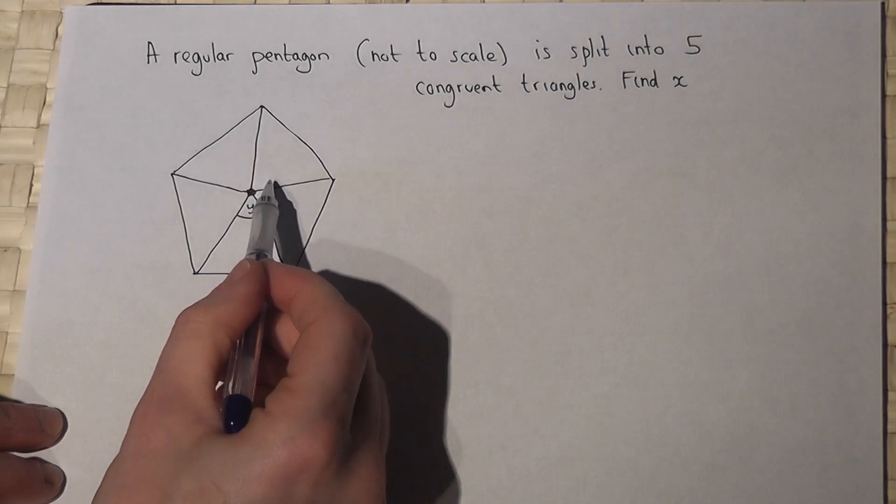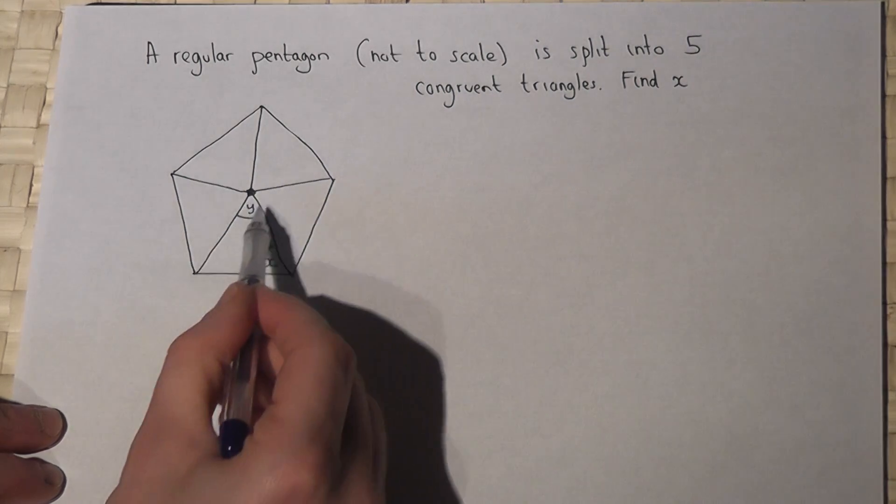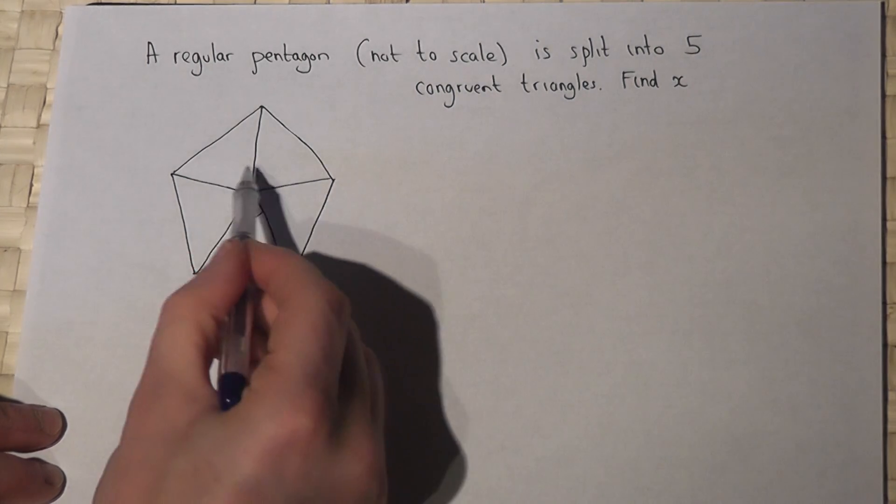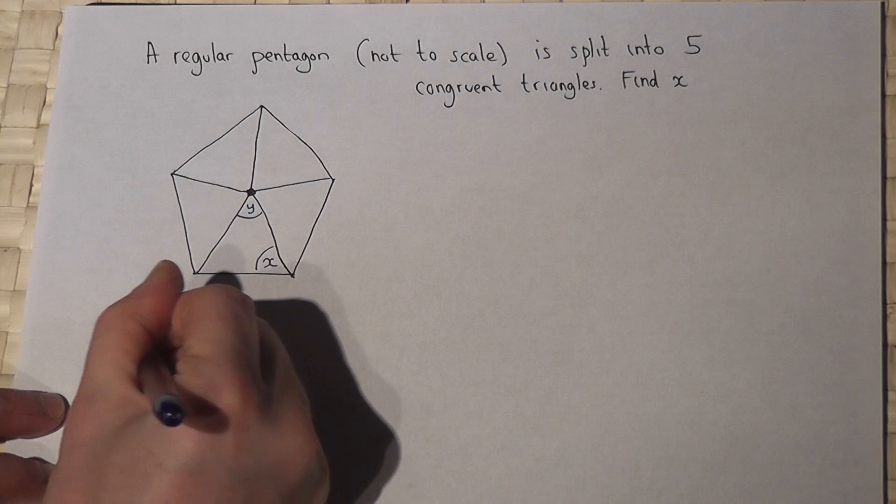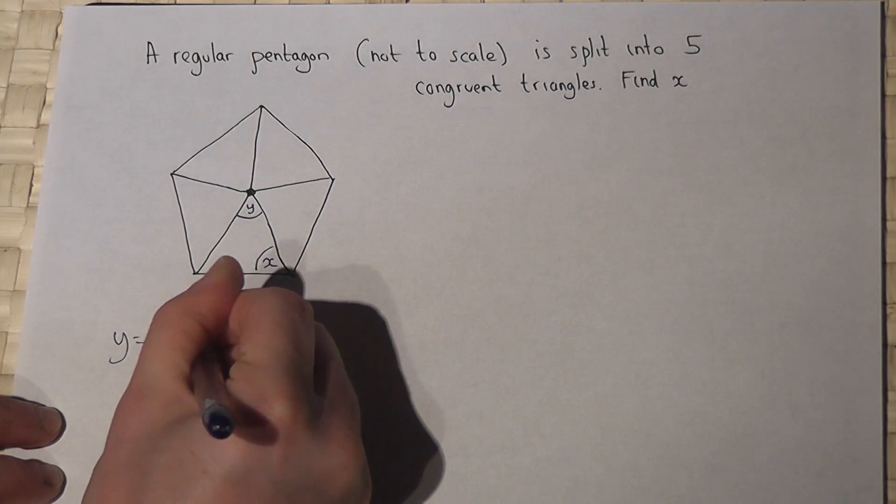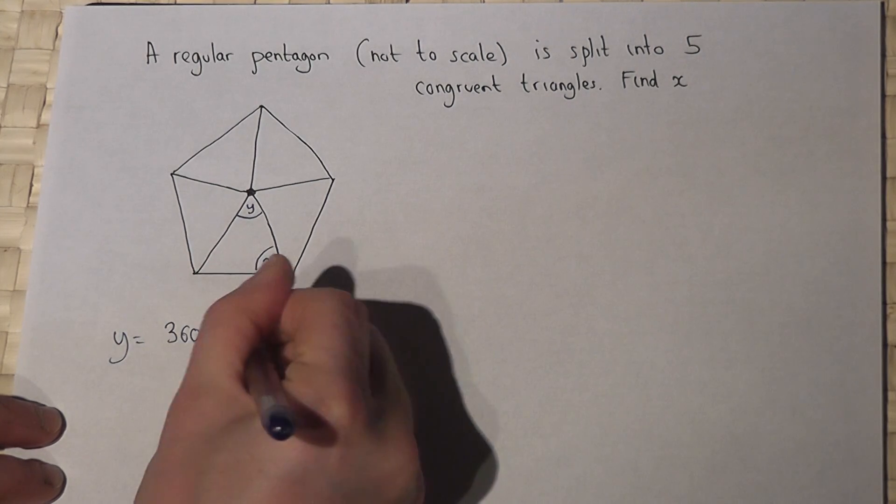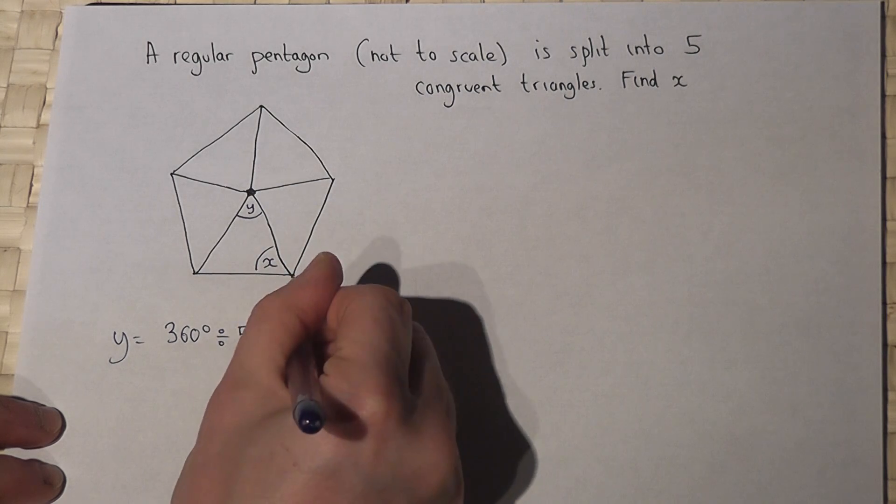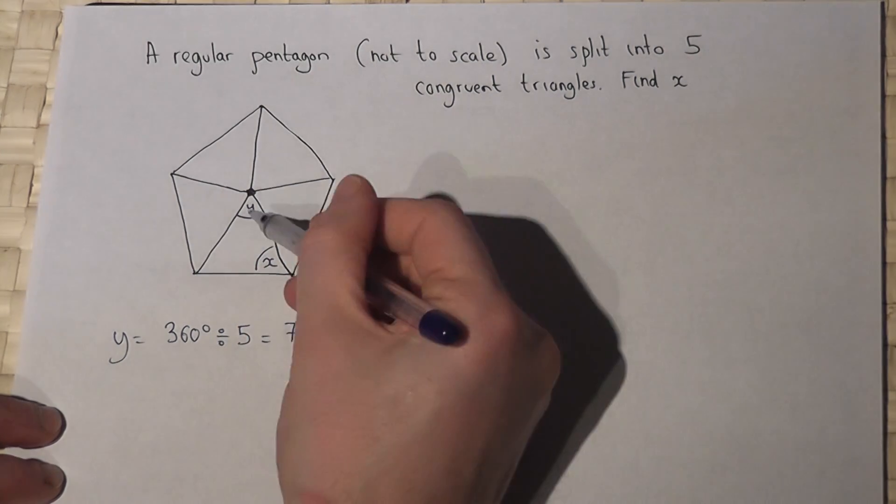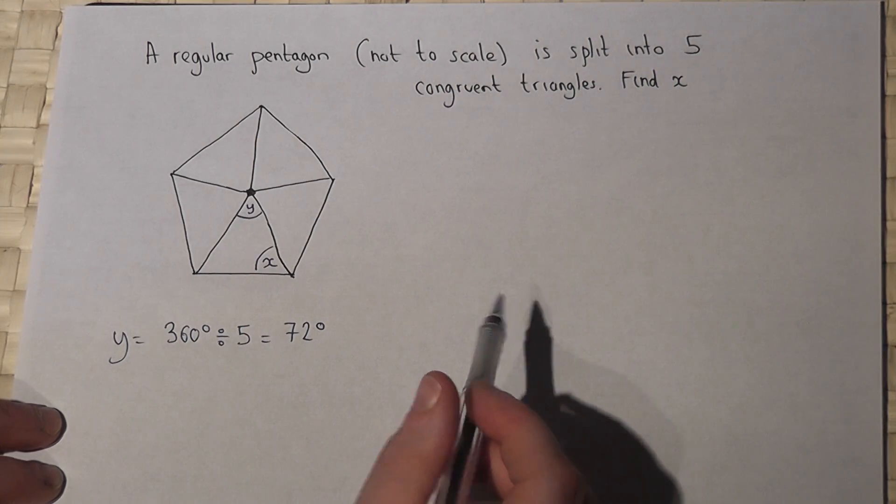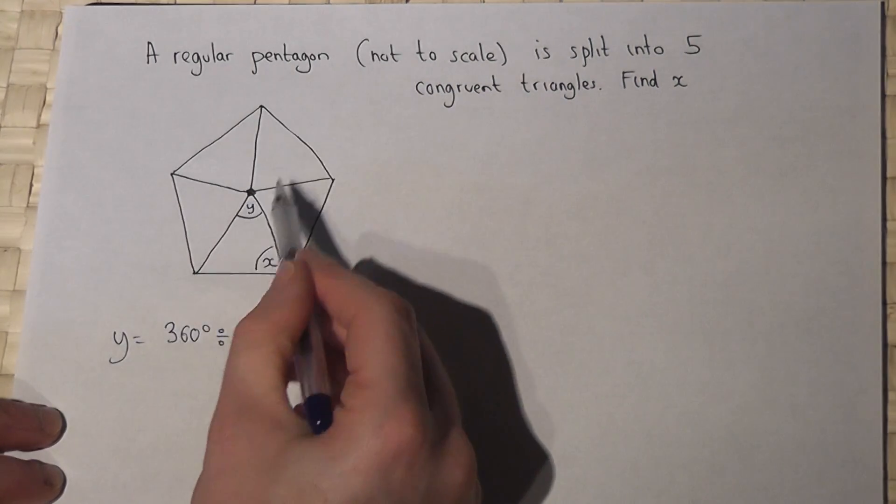Now because this is a full circle then that must equal 360 degrees, so Y will equal 360 degrees divided by 5 which is 72 degrees. There are five angles there around the centre. They're congruent therefore they're all the same.